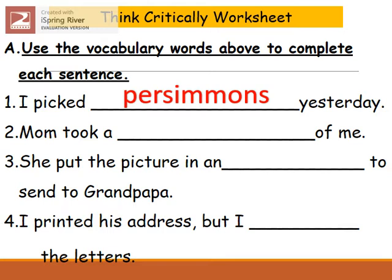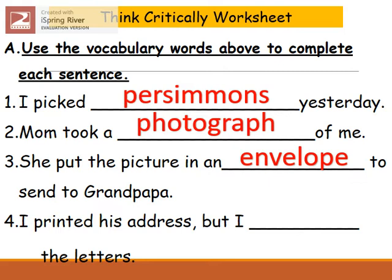Number two: Mom took a blank of me. The word is photograph. Mom took a photograph of me. Number three: She put the picture in an blank to send to grandpapa. It is an envelope. She put the picture in an envelope to send to grandpapa. Number four: I printed his address but I blanked the letters. Smudged. I printed his address but I smudged the letters.